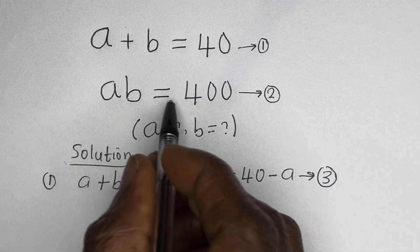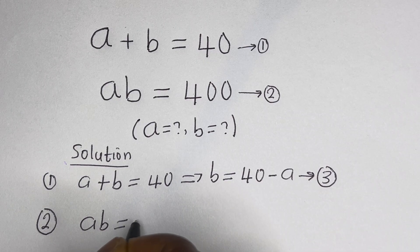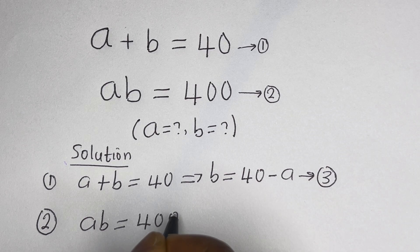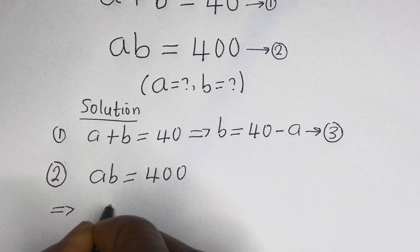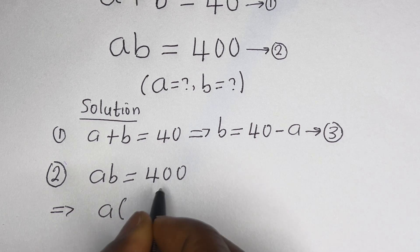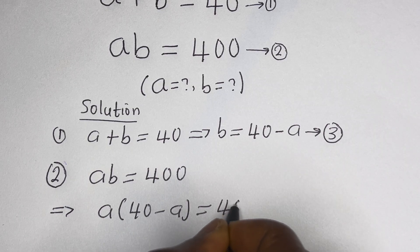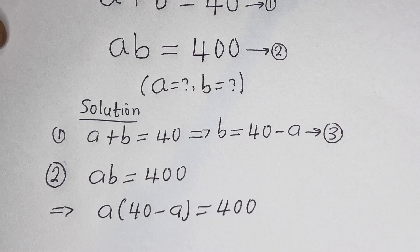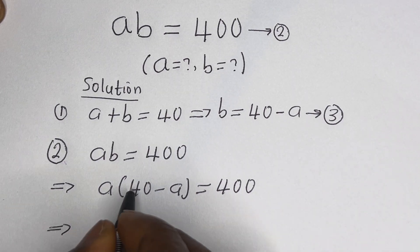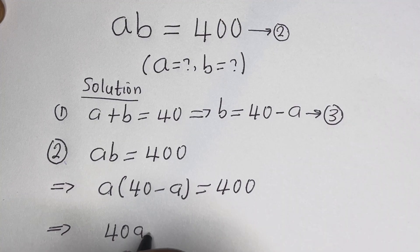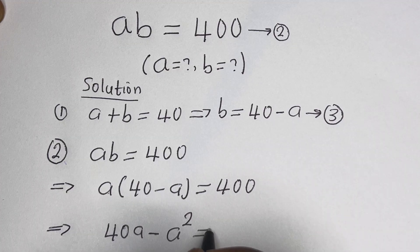Also from equation 2, A times B is equal to 400. Let us substitute for B. This gives A times bracket 40 minus A is equal to 400. Then A multiplied by 40 is 40A, minus A multiplied by A, which is A squared, is equal to 400.